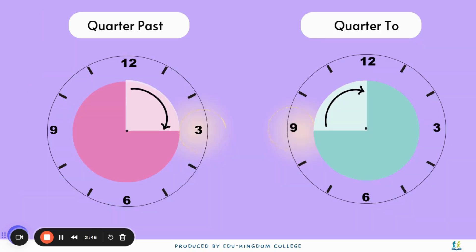Aside from o'clock and half past, there is also quarter past and quarter to. Quarter is a fourth of the clock. When the minute hand is pointing at 3, it will be quarter past, and when the minute hand is pointing to 9, it will be quarter to.